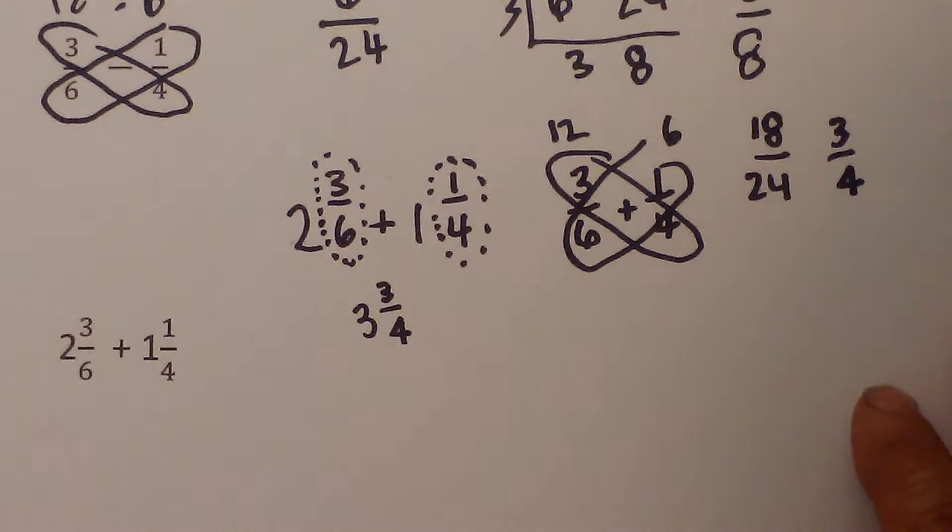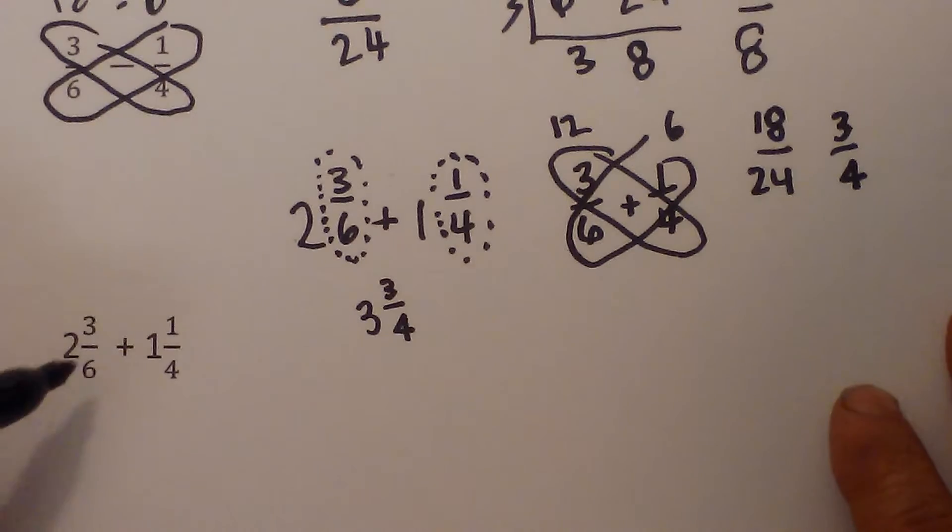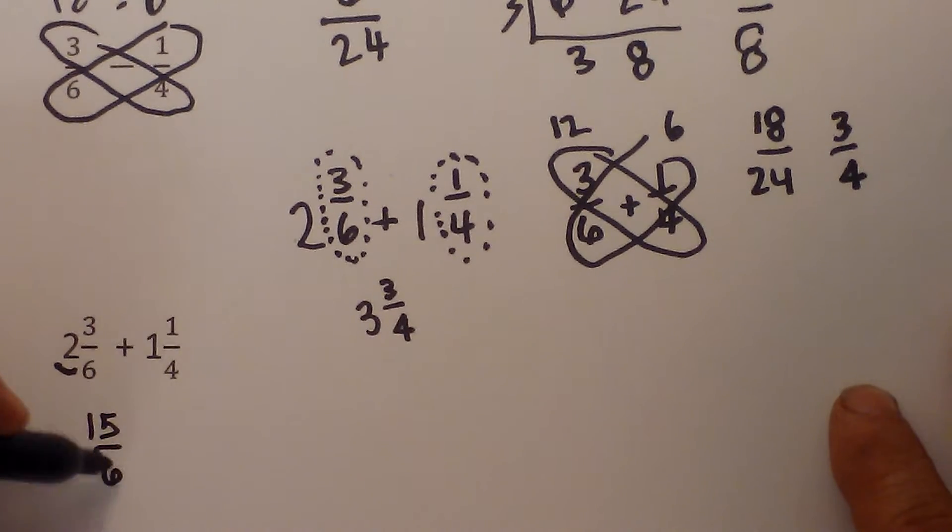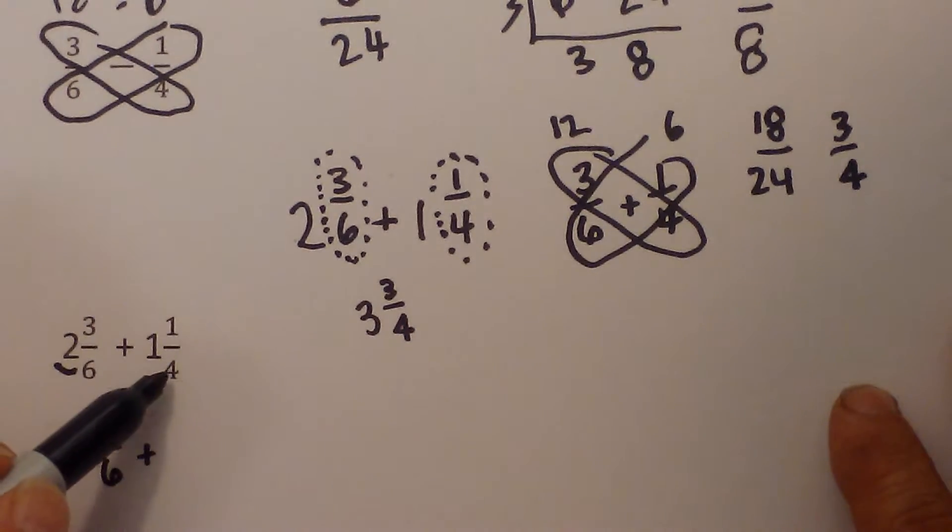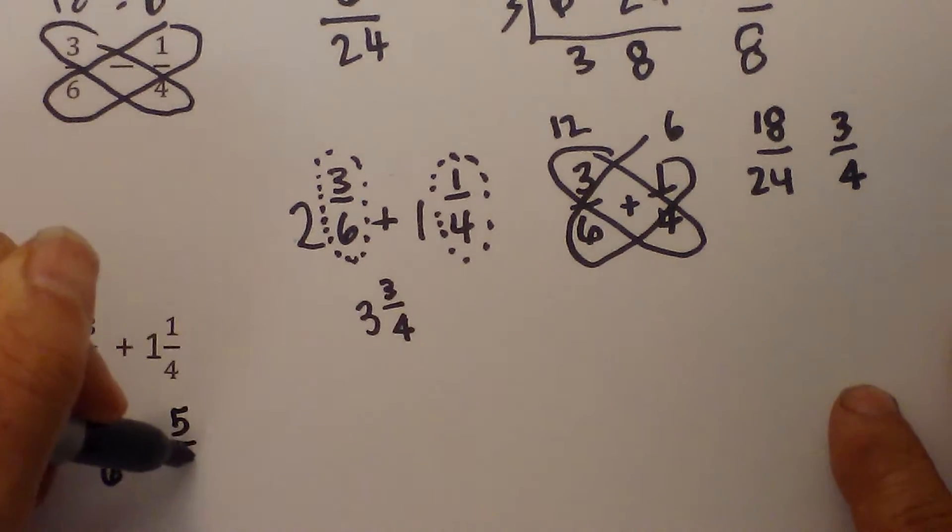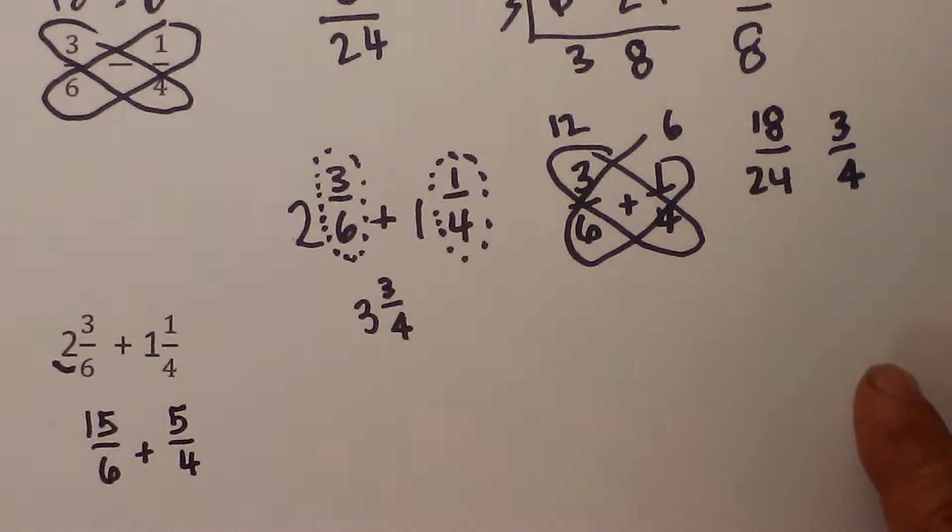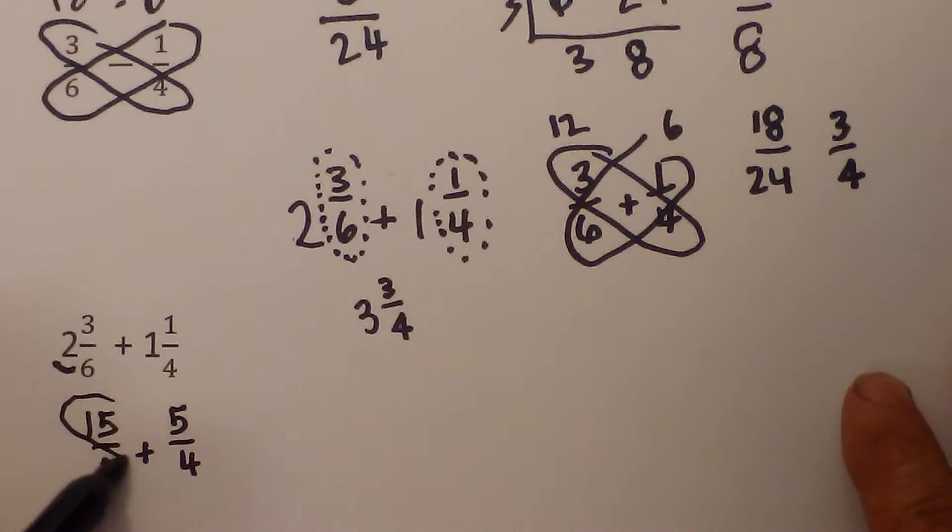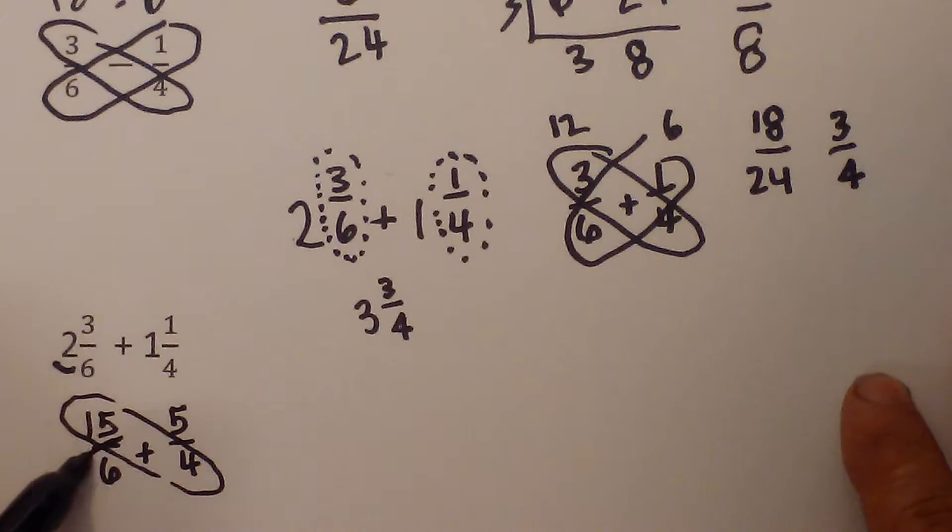Another way if you would like is you can convert them to improper fractions. So I am going to do the circle trick. 6 times 2 is 12 plus 3 is 15 over 6 plus circle trick again, 4 times 1 is 4 plus 1 is 5 fourths. I can then do the butterfly method. It will work for this also.